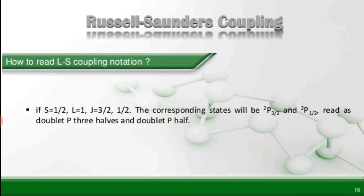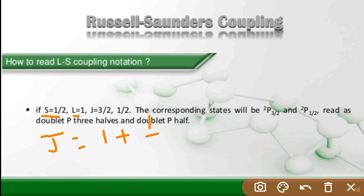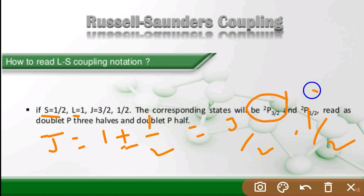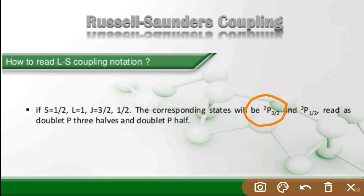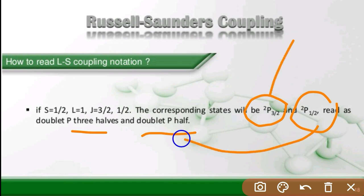How to read the LS coupling notations: if S = 1/2 and L = 1, then J = 1 ± 1/2, giving J = 3/2 and J = 1/2. The corresponding states will be 2P_(3/2) and 2P_(1/2), read as doublet P three-halves and doublet P one-half.